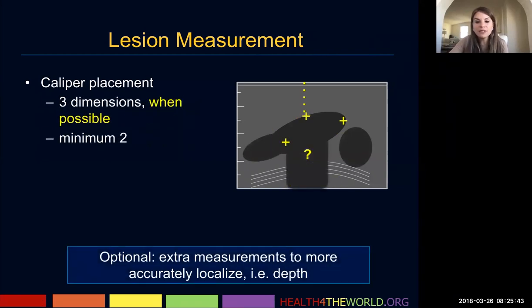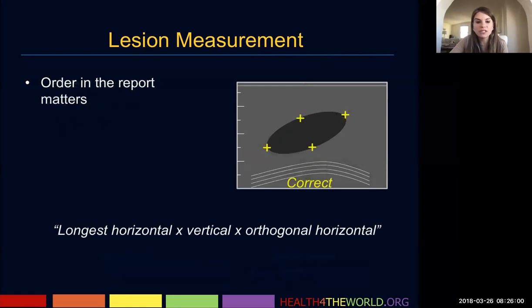We want to give three dimensions when possible, with a minimum of two. For example, when we can't measure in one direction because of posterior acoustic features, we need at least two measurements, and often we can get three. They want you to report the longest horizontal by vertical by the orthogonal horizontal. The view in which the lesion is largest is the plane in which you obtain the two measurements, and in the shorter plane you obtain a single orthogonal horizontal measurement.